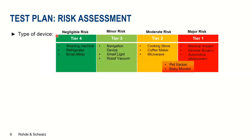We have a tier-based system where we categorize risk. The risk is defined by whether a wireless coexistence failure causes bodily harm to the user. If yes, those are more risky products categorized in higher risk tiers — Tier 1 being the highest. Tier 2 is for slightly less risky products, and Tier 3 and Tier 4 are the less risky ones.